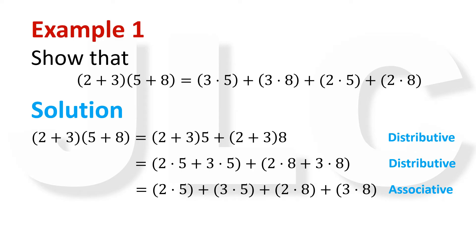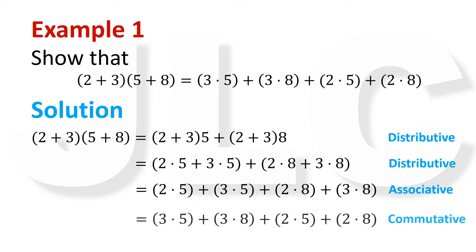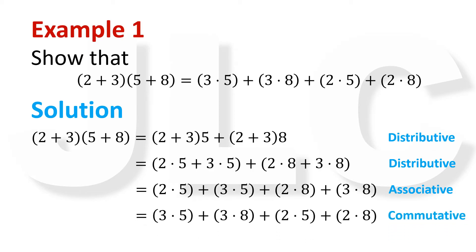By associative property, we can write this as 2 times 5 plus 3 times 5 plus 2 times 8 plus 3 times 8. And finally, by commutative property, we can rearrange this as 3 times 5 plus 3 times 8 plus 2 times 5 plus 2 times 8, which evaluates to 65.